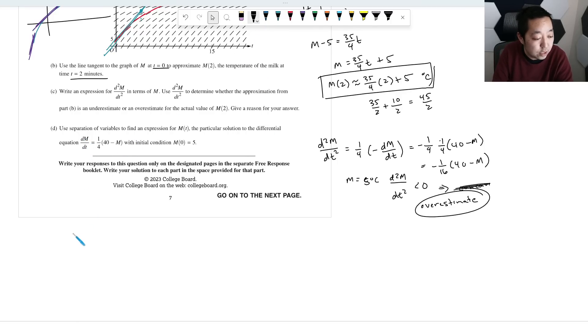So let's take a look at doing this. So separation of variables, I bring the dT up. I'm going to bring the 40 minus M over by dividing it on both sides. And that allows us to separate the variables. And then I'm going to integrate both sides.